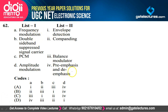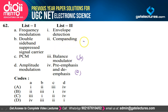Question 62: Matching modulation types — frequency modulation (FM) is related to pre-emphasis and de-emphasis (A→4); double sideband suppressed carrier (DSB-SC) is related to balance modulator (B→3); PCM is related to companding (C→2); amplitude modulation (AM) is related to envelope detector (D→1) — wait, D→AM→envelope detector. Option D is the correct answer.